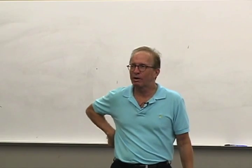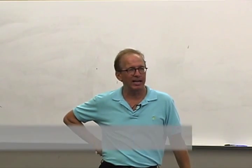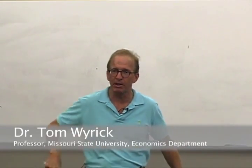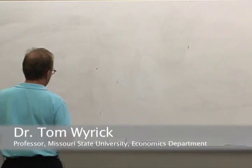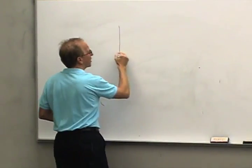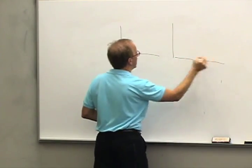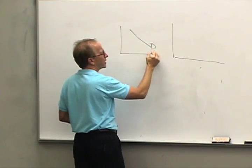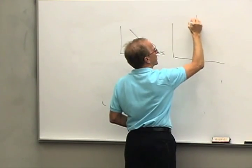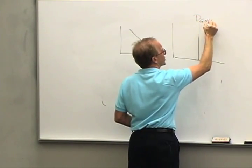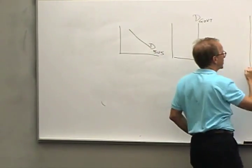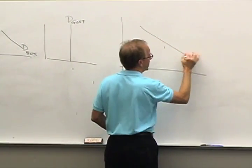What we've been talking about is credit markets and how those credit markets function, how an interest rate is determined. We have this model and today we'd like to finish that up. The model has two components of demand: there was the demand for credit by the business sector and a demand for credit by the government for the deficit. We add those two demands together to get the total demand for credit.